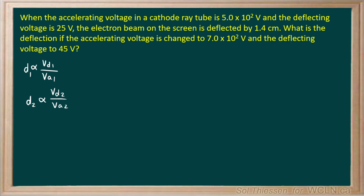Starting with the deflecting voltages: the second deflecting voltage over the first deflecting voltage is 45 volts over 25 volts. Reducing numerator and denominator by a factor of 5 gives us 9 fifths. So the second deflecting voltage is 9/5 times the first deflecting voltage.